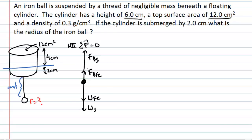The sum of those external forces still has to be zero. Choosing upwards as the positive direction, Newton's second law gives: the buoyant force of the styrofoam plus the buoyant force of the iron ball minus the weight force of the iron ball minus the weight force of the styrofoam equals zero.